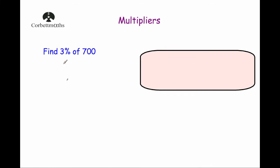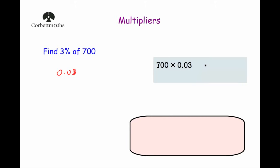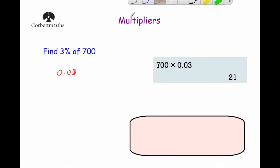Our next question says find 3% of 700. We're going to change our 3% to a decimal number. To change that to a decimal, remember just divide the 3 by 100, so that's going to be 0.03. So 3% as a decimal is 0.03. And if you times 700 by 0.03, we'll find what 3% of 700 is. When we do that, 700 times by 0.03 is equal to 21.